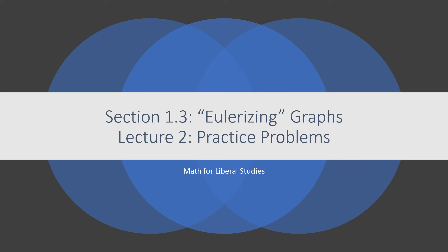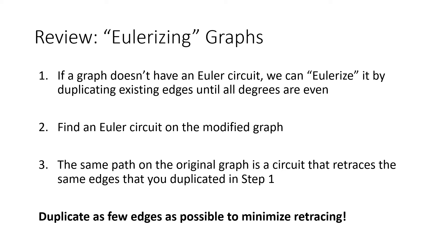This is the second lecture for section 1.3 on Eulerizing graphs. In this lecture I'll go through several practice problems to show you how the process works. To review: we look at a graph, check the degree of every vertex, and if any are odd we know the graph does not have an Euler circuit. We Eulerize it by duplicating existing edges until all degrees are even, then find an Euler circuit. To minimize retracing, we minimize the number of edges duplicated.